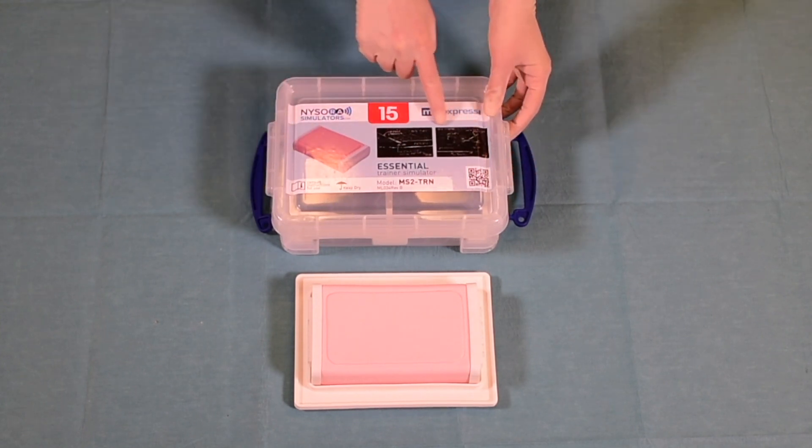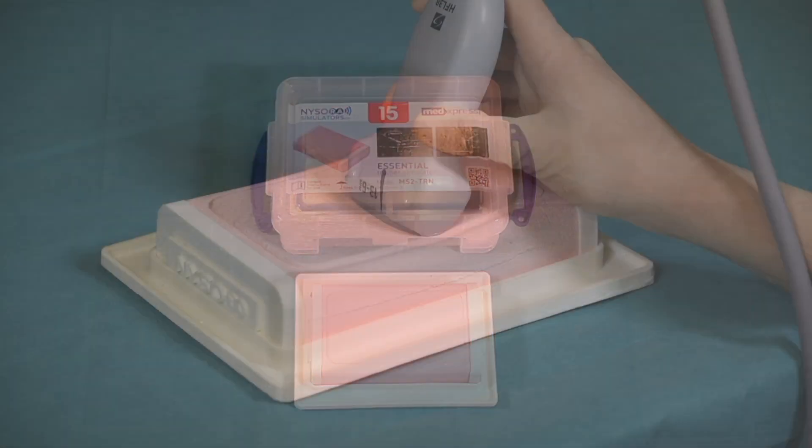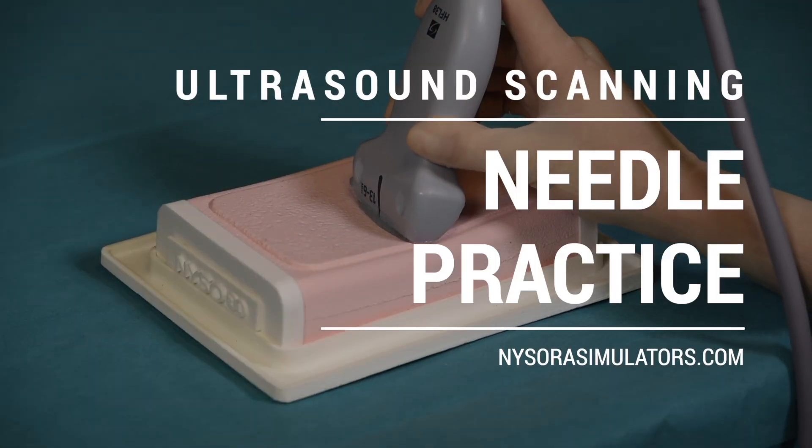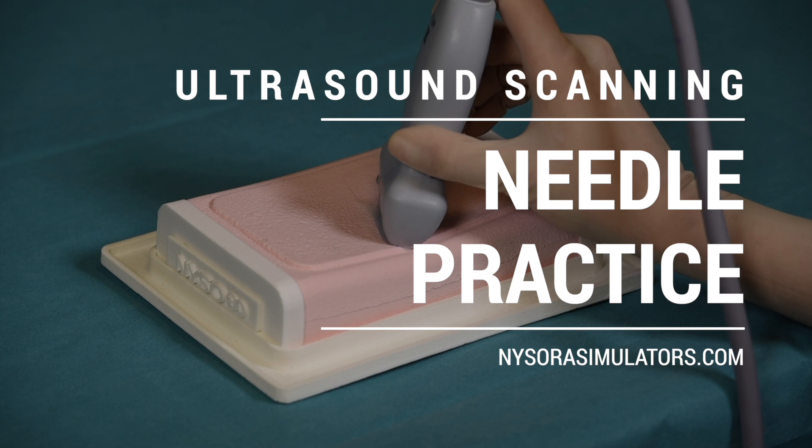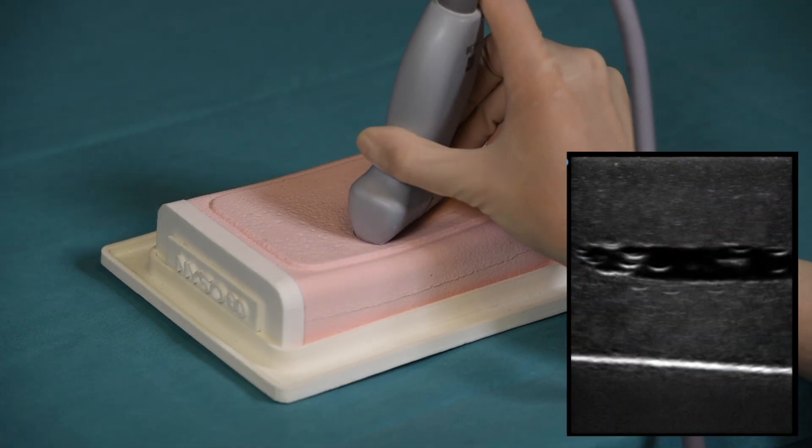The custom designed box contains clear instructions on its use. Practicing with the Nysora Essential Trainer consists of visualizing anatomical structures using ultrasound in cross-sectional and longitudinal views.